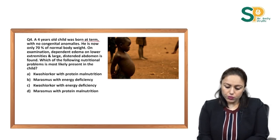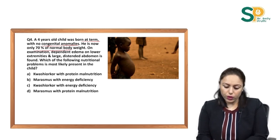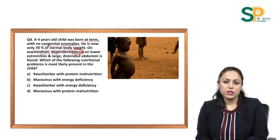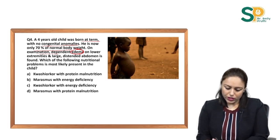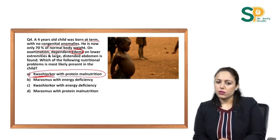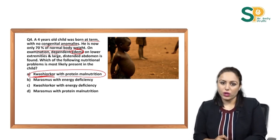Next question: a 4-year-old child born at term with no congenital anomalies is now only 70% of normal body weight. Examination shows dependent oedema on lower extremities and a large distended abdomen. Which nutritional problem is most likely present? This is a clear case of Kwashiorkor, which involves protein deficiency. Children with dietary protein deficiency develop Kwashiorkor.